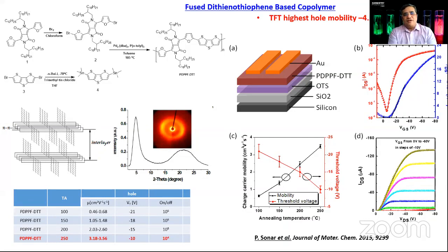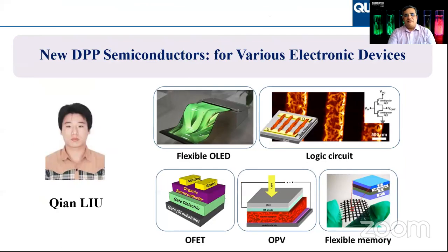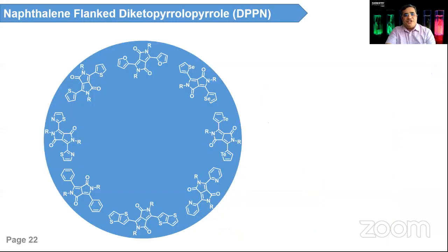We also made DPP with furan flanking groups. DPP can be created with various flanking groups — thiophene, furan, selenophene, or pyridine. These are all DPP polymers we synthesized and published in a number of papers. When I moved to Australia, my student Neil did a fantastic job making another new DPP-type material.